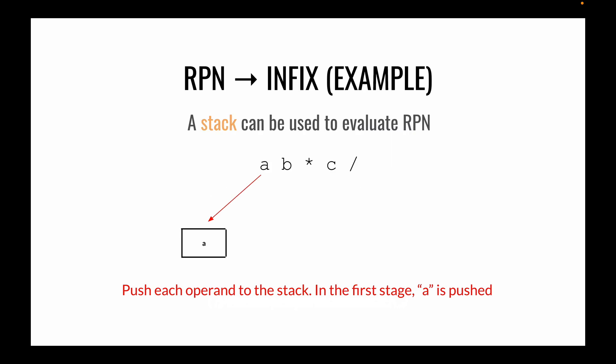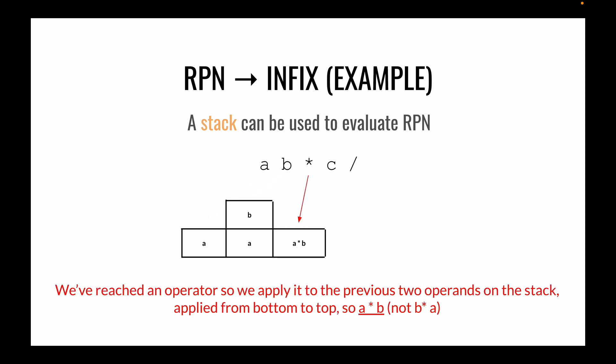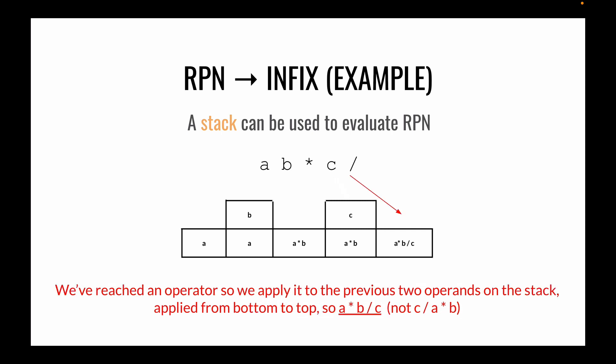It's also possible to use a stack to go from RPN to infix. We add A to a stack, then B to the stack. Now that we've reached an operator, we apply it to the last two operands on the stack — in this case, A times B. Then we add C to the stack, and reaching another operator, we apply it to the last two operands on the stack, giving us the final expression of A times B divided by C.